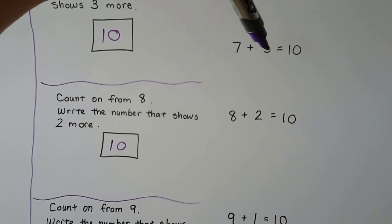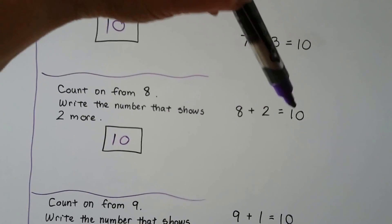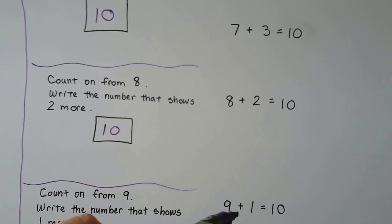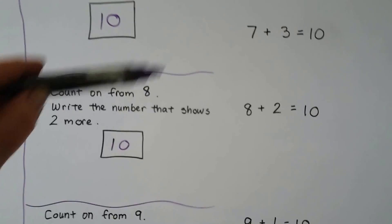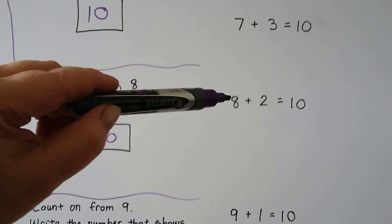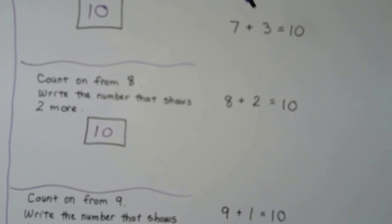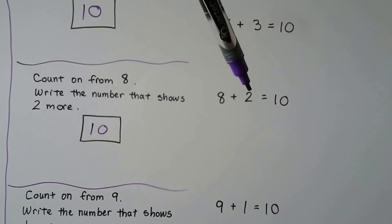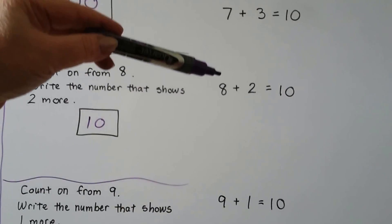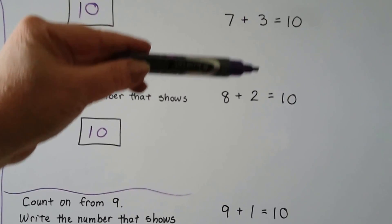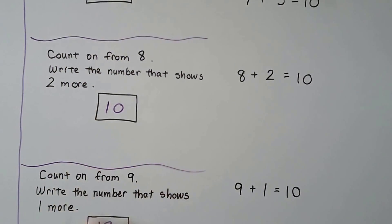7 plus 3 equals 10. 8 plus 2 equals 10. 9 plus 1 equals 10. Do you see the pattern? The first addends go up by 1 — 7, 8, 9 — and the second addends go down by 1 — 3, 2, 1 — and they all equal 10.